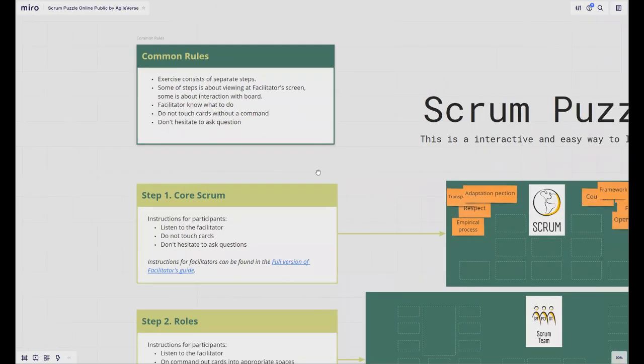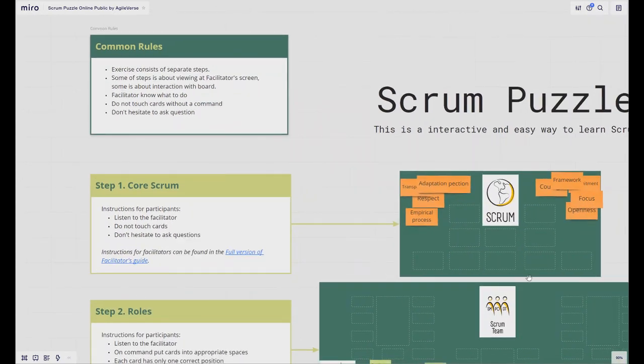The next step is the Core Scrum step. This is the only section that should be driven directly by facilitator. It's about Core Scrum elements such as values, three pillars, for example empiricism, transparency, inspection, adaptation, et cetera. How does it work? As facilitator you should take one of these orange cards, put it in the free space and tell the group what it is. Ask the group how they understand what it is and discuss the meaning of this in Scrum. After you complete all of these orange cards, you can go to the next section.